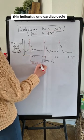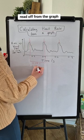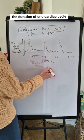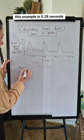This indicates one cardiac cycle. Read off from the graph the duration of one cardiac cycle. This example is 0.28 seconds.